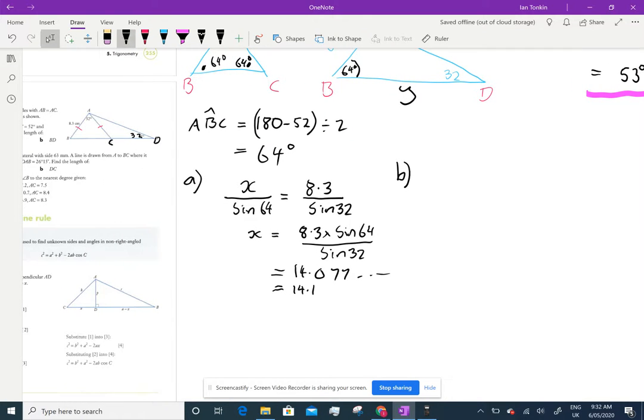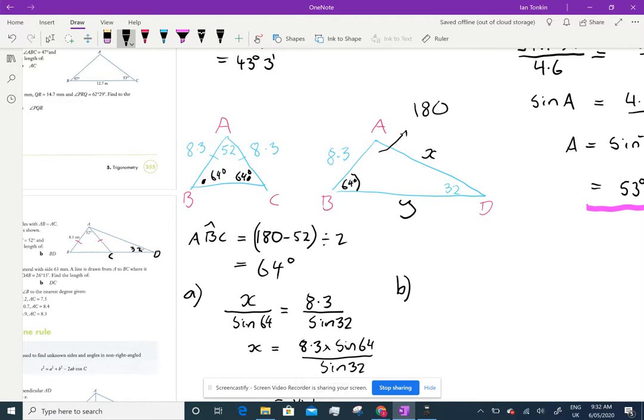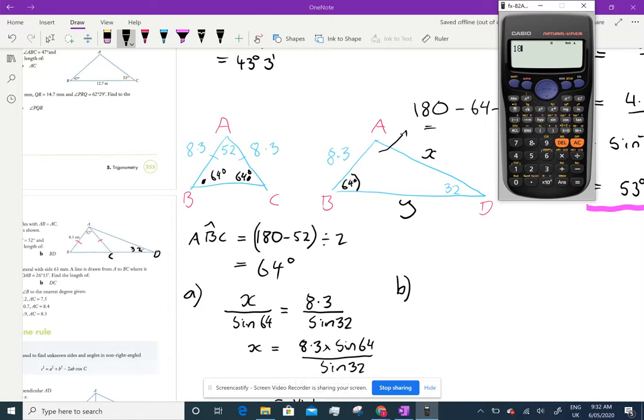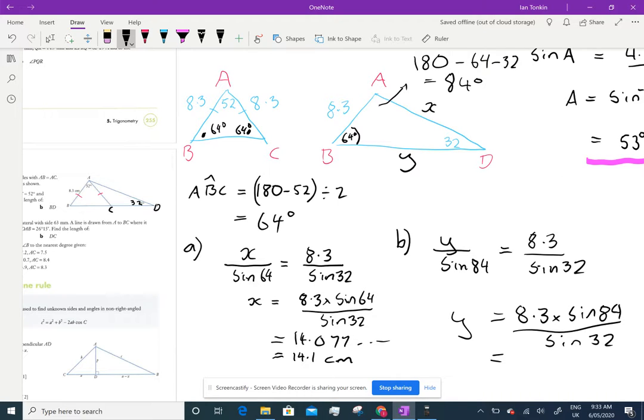Because I don't want to use a rounded version here because that'll affect my answer, I'm going to find this angle, which is 180 minus 64 minus 32. 180 minus 64 minus 32, that's 84 degrees. So I can do Y over sine 84 equals 8.3 over sine 32.